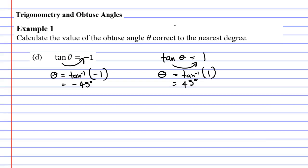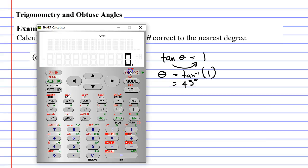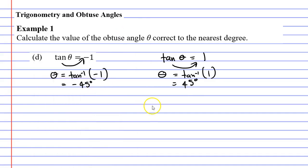Because if negative one gives you negative 45 degrees I reckon positive one would have given us positive 45 degrees. Let's just double check that anyway. Second function tan bracket positive one equals and we get positive 45 degrees.